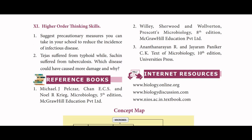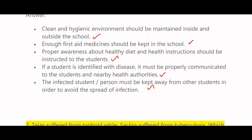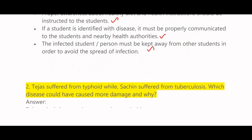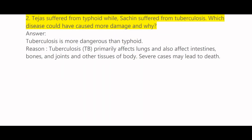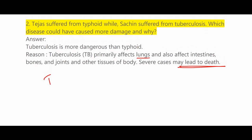The infected student or person must be kept away from other students in order to avoid the spread of infection. Next question: Tejas suffered from typhoid while Sachin suffered from tuberculosis — which disease could have caused more damage and why? Tuberculosis is more dangerous than typhoid because tuberculosis primarily affects the lungs and also affects intestines, bones, joints, and other tissues of the body. Severe cases may lead to death.